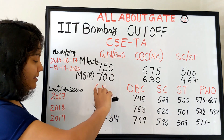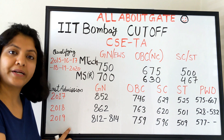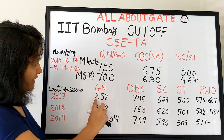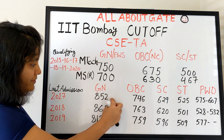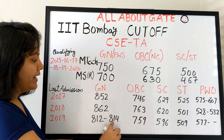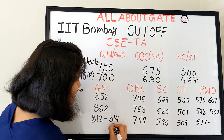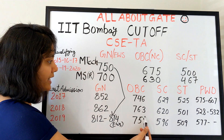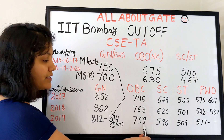Here I have data for the last three years: 2017, 2018, and 2019. For the General category, the last admitted GATE scores were 852, 862, and 812 respectively. The score of 814 is for the EWS category, which started just last year. For OBC category, the scores have been 746, 763, and 759.